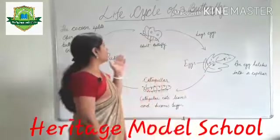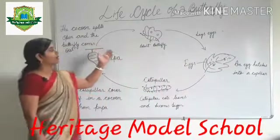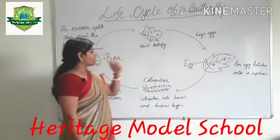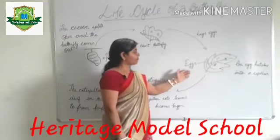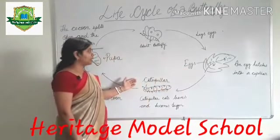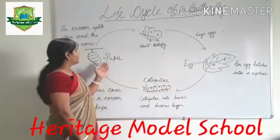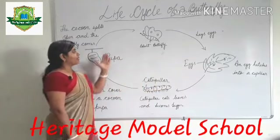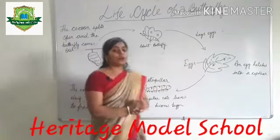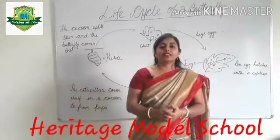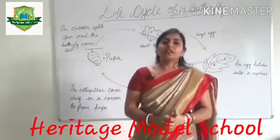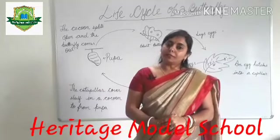As you can see, I have drawn a life cycle of a butterfly. This is the first stage: egg. Second stage is caterpillar. Third stage is pupa, and the fourth stage is adult butterfly. So there are four stages of a life cycle of a butterfly.